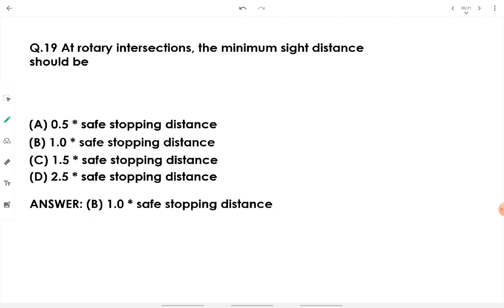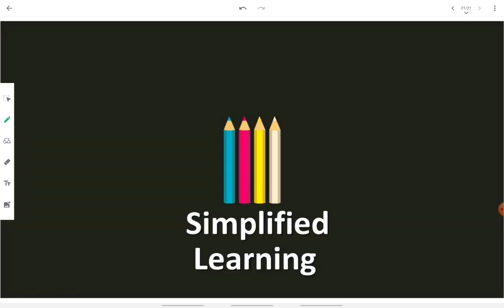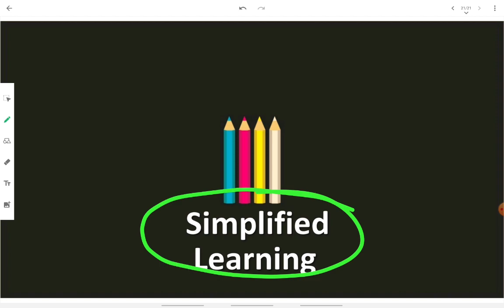At a rotary intersection, the minimum sight distance should be equal to the safe stopping distance (1.0 × SSD). That was all about PIEV theory — hope you learned something new. If you liked the video, please press thumbs up, comment your suggestions, share the video with your friends, and subscribe to Simplified Learning for more such interesting videos.